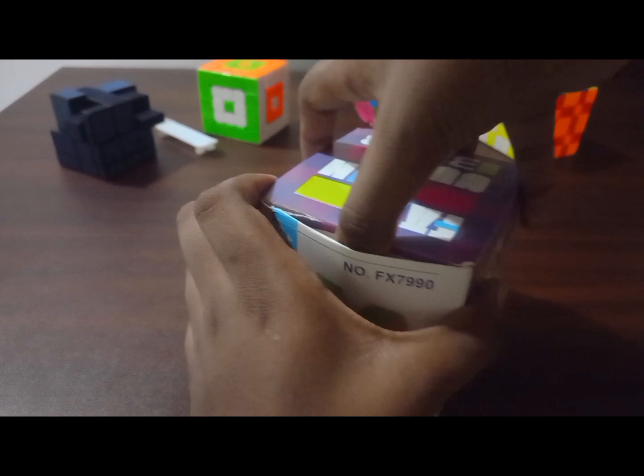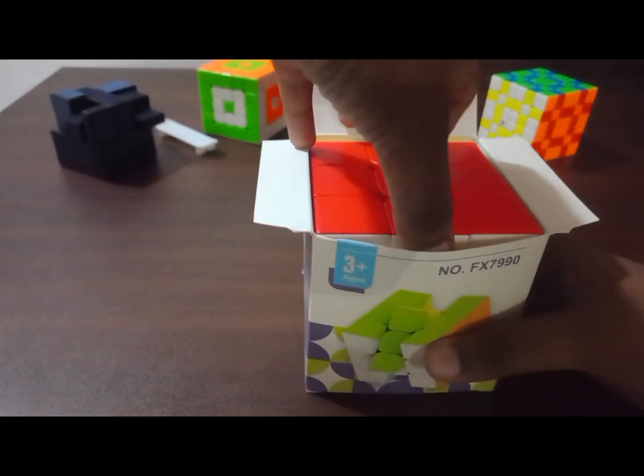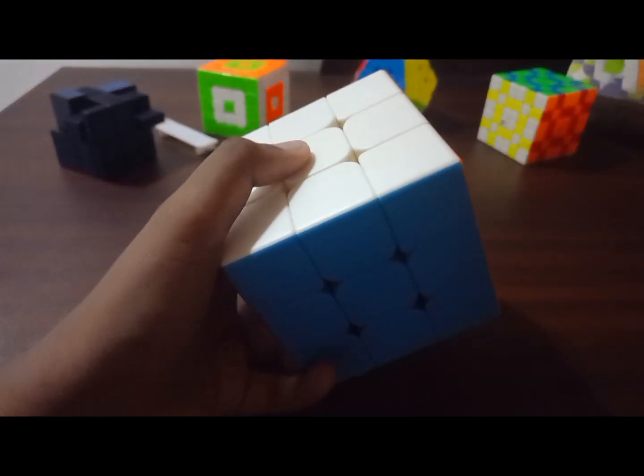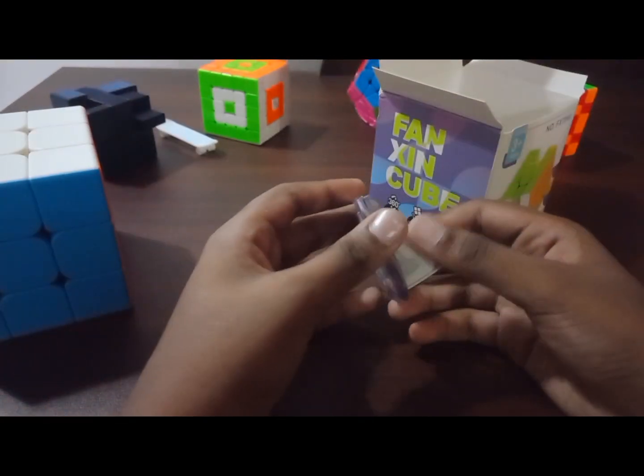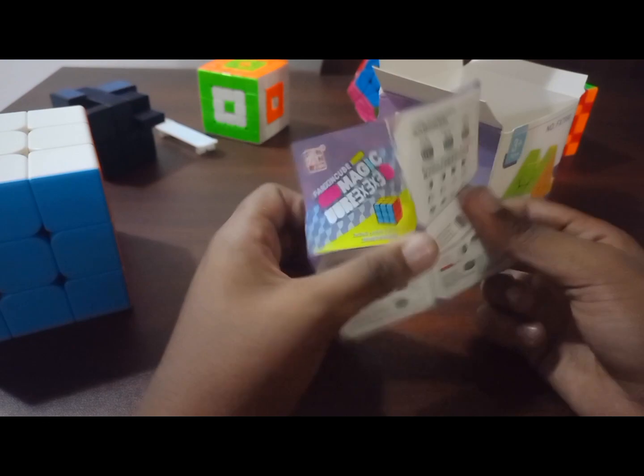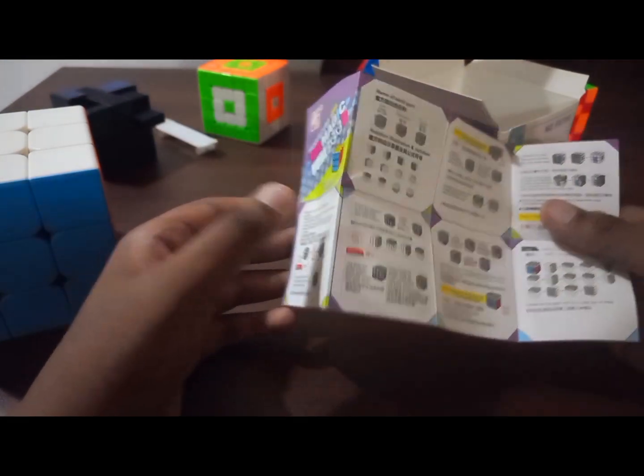Let's unbox it. Oh my god, this is so big. Let's keep it aside. There's an instruction manual. Yeah, it's an instruction manual to teach how to solve the 3x3. That's why I think it's called the Vaccine 9 centimeter long teaching cube.